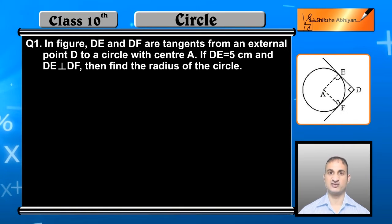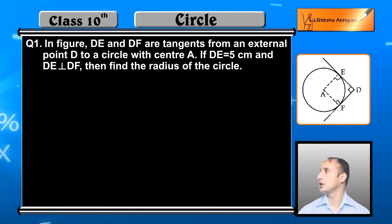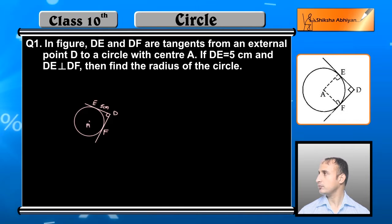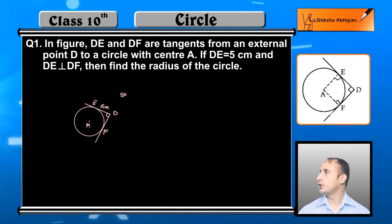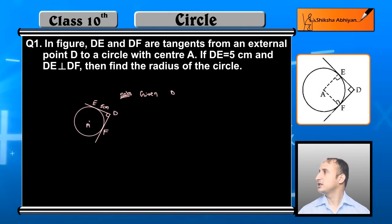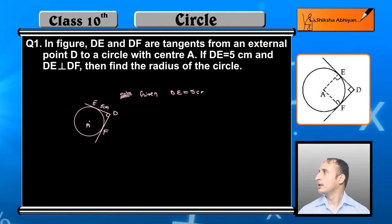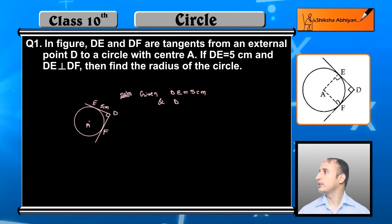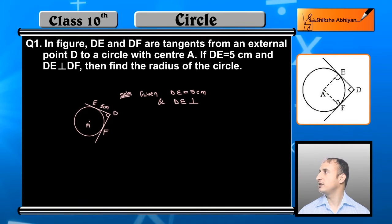Now let me solve this formally. I have already drawn the figure here. Given: DE = 5 cm, and DE is perpendicular to DF — this is given.